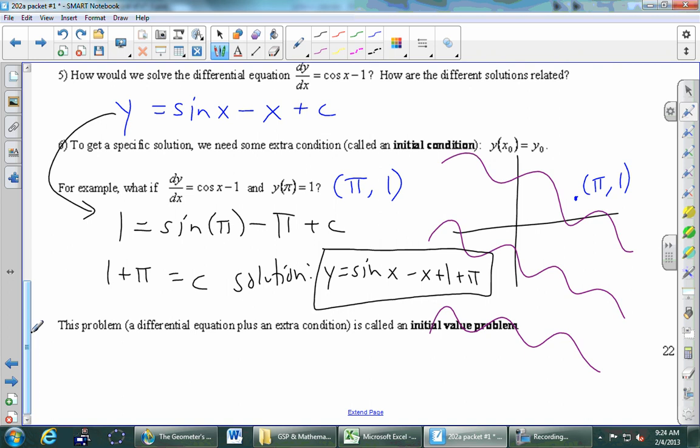Cool says c is one plus pi. Anybody agree or get something different? That looks good. Sine of pi is zero. Add that other pi to both sides. We've got it. So that means that our solution is that same function we wrote up at the top in blue. But instead of putting a plus c, you're going to put this specific number right here. So y is sine x minus x plus 1 plus pi. Any questions on that?